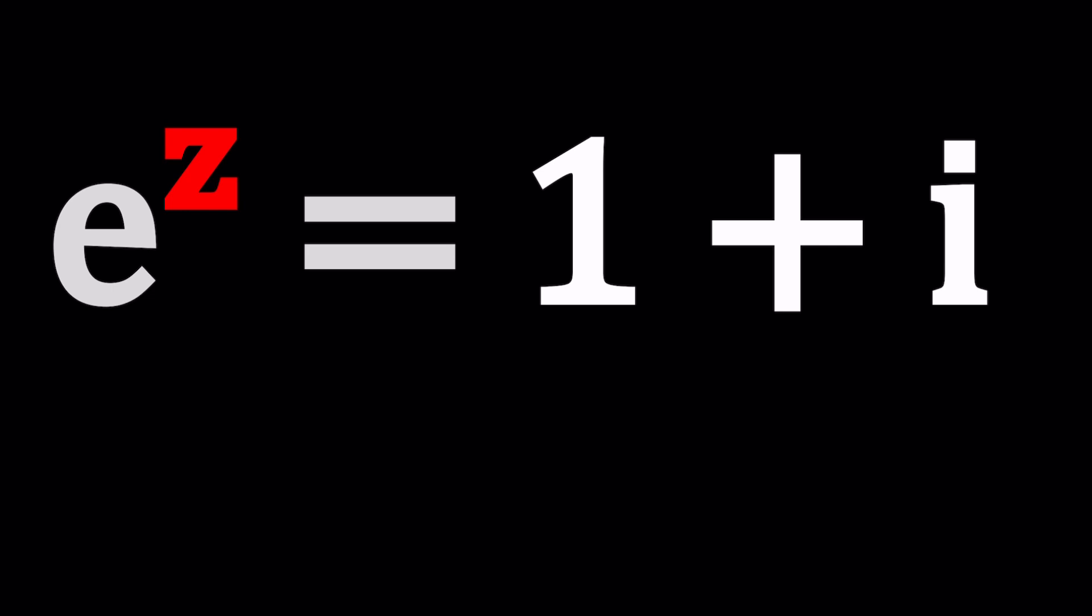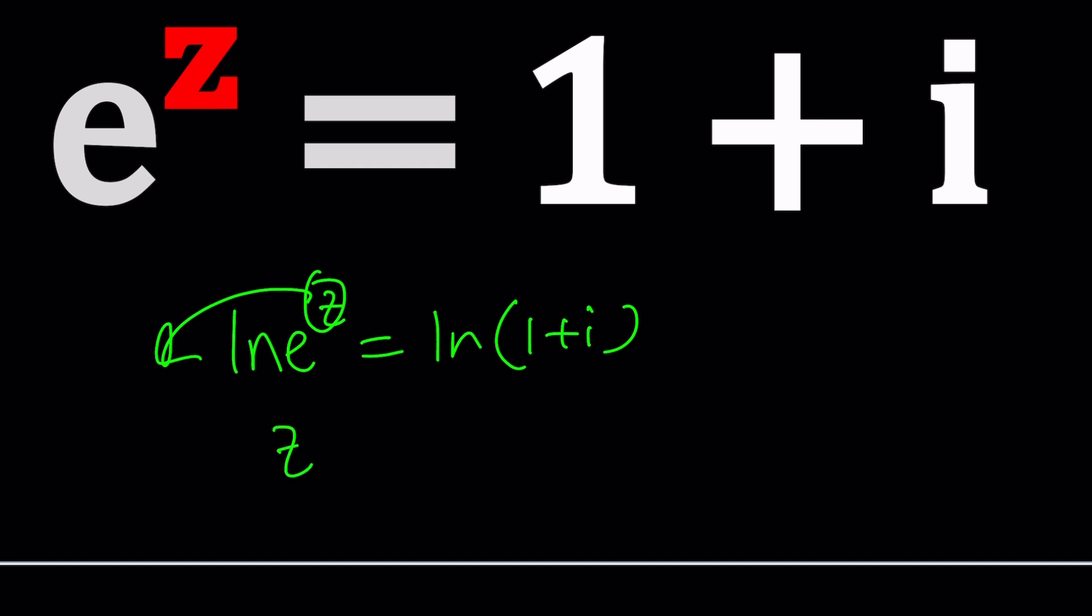So at this point you're probably thinking, at least some of you are thinking, why don't we just ln both sides, right? Natural log both sides, and then we're done. That easy, right? You think so? Bring the z to the front, ln is 1, so z equals ln(1+i), that's the answer. Uh-oh, what is ln(1+i) though? A complex logarithm, right? And guess what? It's multi-valued. So let's approach it more rigorously, just a little bit more rigorously, okay?